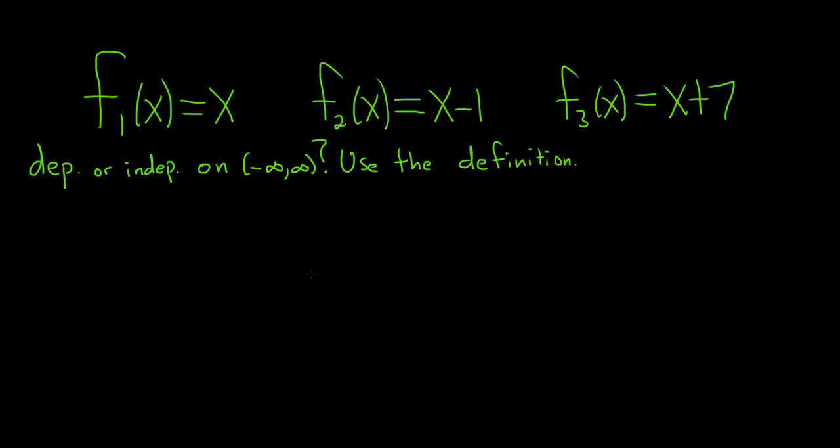Hi everyone. In this problem we're given three functions: f₁(x) = x, f₂(x) = x - 1, and f₃(x) = x + 7. We're being asked if the functions are linearly dependent or linearly independent on the set of real numbers, negative infinity to infinity. Furthermore, we're being asked to use the definition.